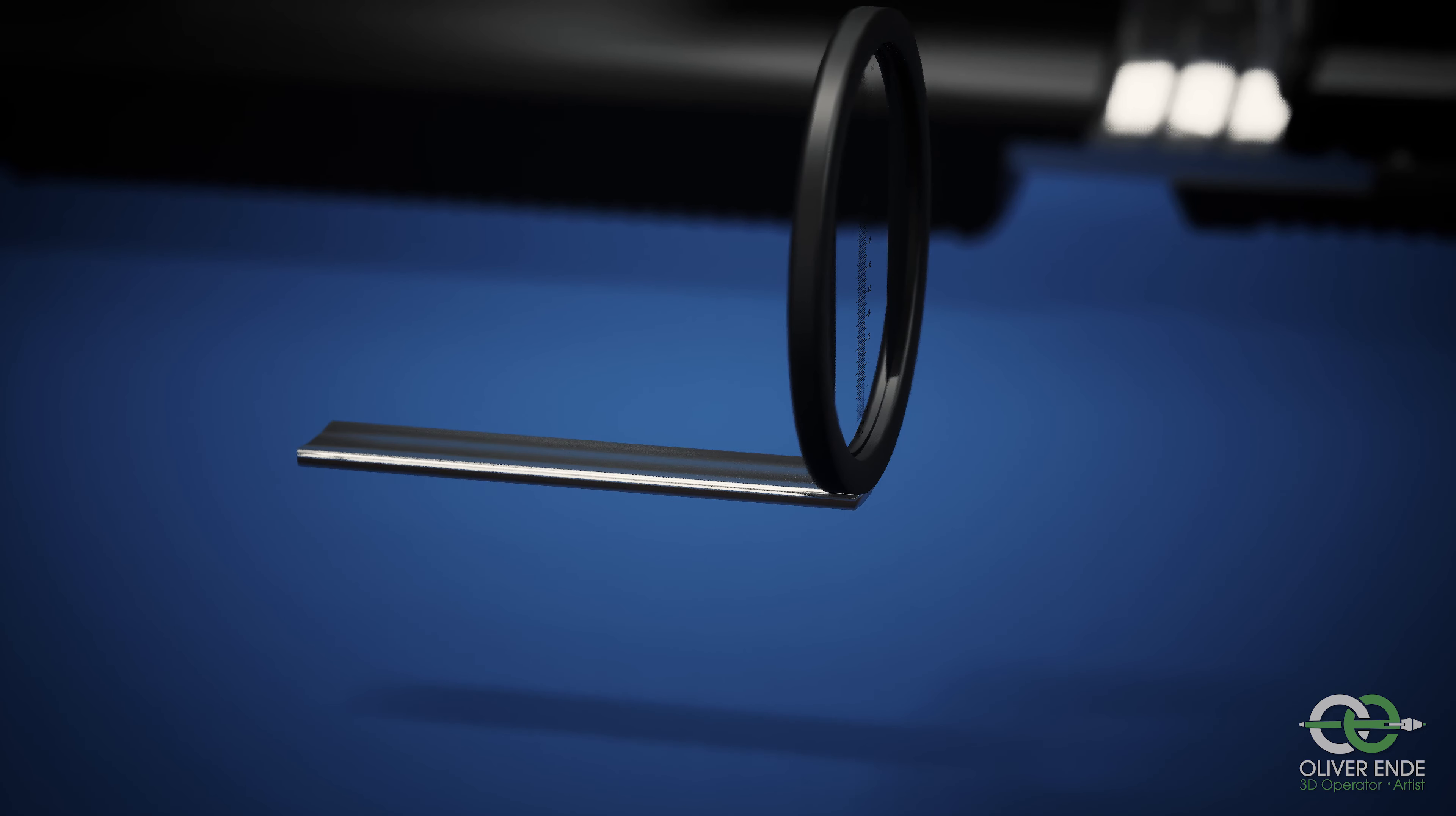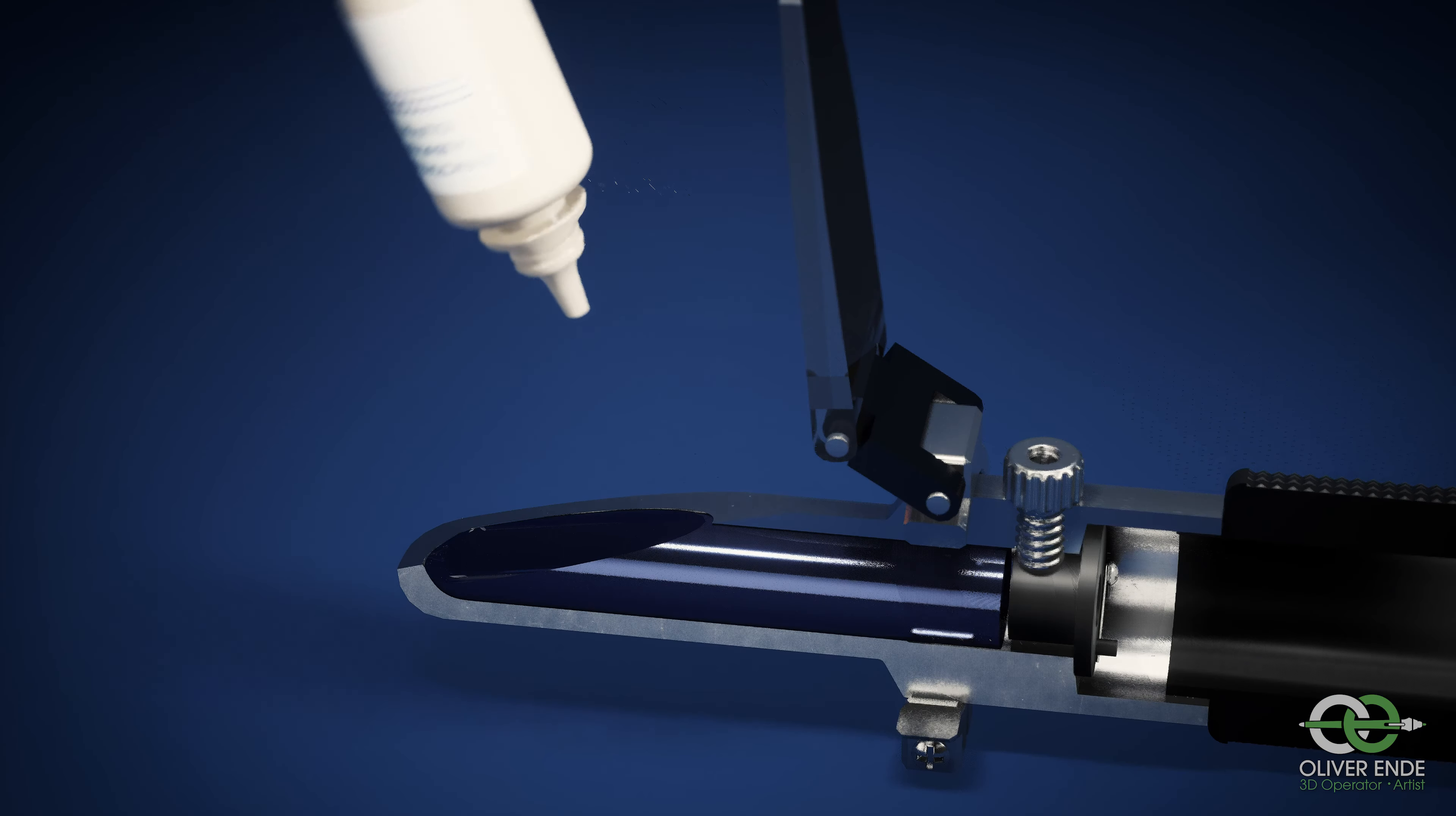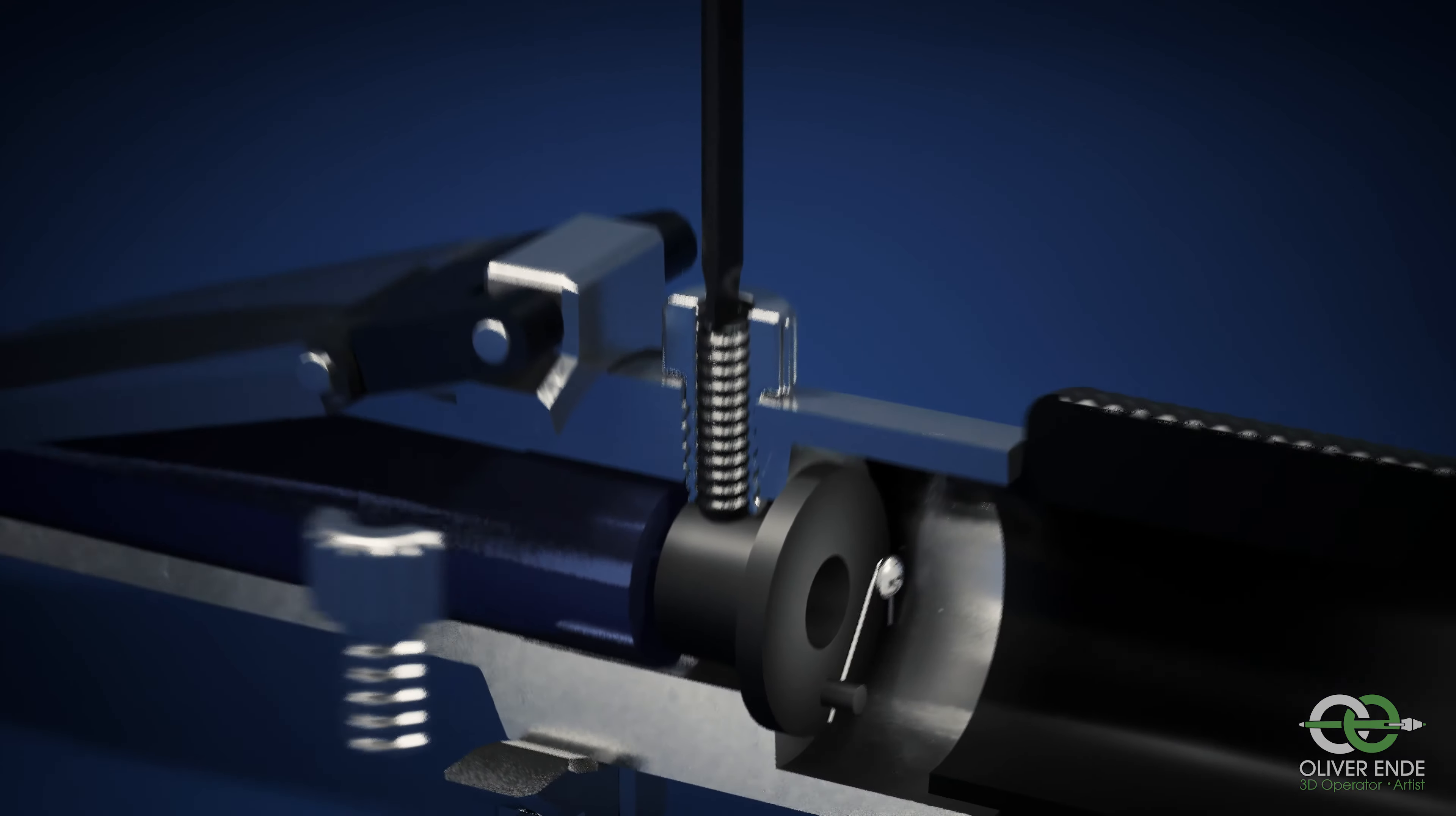A refractometer is calibrated by dropping a so-called reference or calibration solution onto the prism. If the measurement result does not correspond exactly to the reference value of the solution, you can adjust the calibration screw with the screwdriver until the value matches as closely as possible.